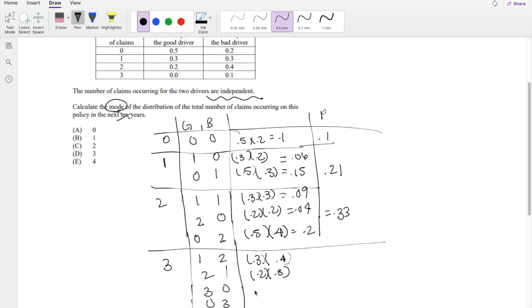Good driver has 3, that is 0. So that's 0. And then this one is 0.5. Bad driver has 3 claims, that's 0.1. So this is going to be 0.12, 0.06, and 0.05. Add them together, what do you get? 0.23.